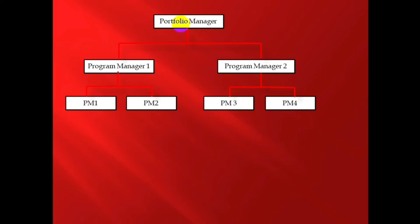Program Manager 1 will be responsible for commercial projects, and Program Manager 2 will be responsible for residential projects. Project Manager 1, reporting to Program Manager 1, will be responsible for Project 1 under commercial, and Project Manager 2 will be responsible for Project 2 under commercial.